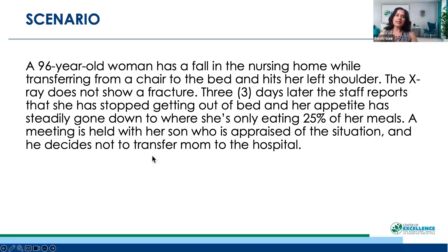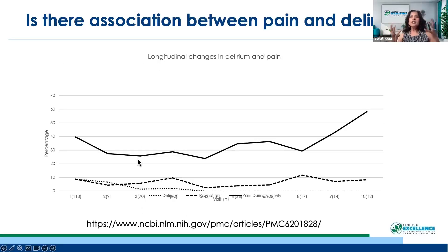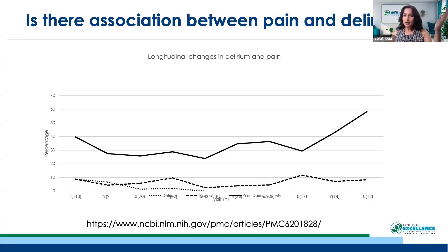This is an actual patient — a 96-year-old lady who had a fall in the nursing home while transferring from chair to bed and hit her left shoulder. The x-ray did not show a fracture. Three days later, staff reported that she stopped getting out of bed and her appetite went steadily down — she was only eating 25% of her meals. A family meeting was held and the son decided to treat her within the nursing facility. We were wondering what could be the reason why this highly functional person, after the fall and shoulder pain, completely stopped eating and started having hallucinations.